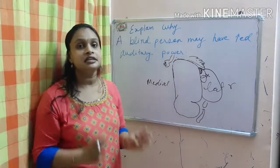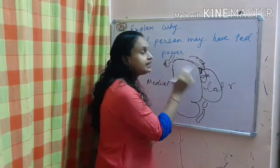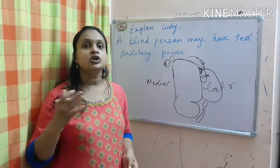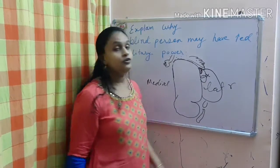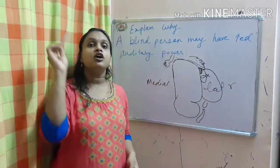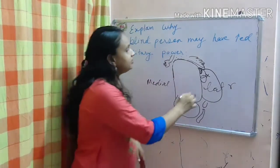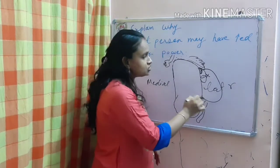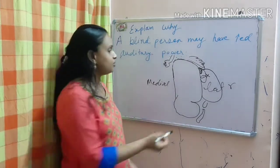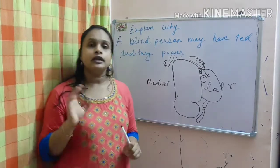So now the auditory cortex has a larger area in comparison to a normal individual. They are having more auditory power — they can discriminate sounds more in comparison to a normal person because of greater representation in the brain. This phenomenon is known as cortical plasticity. When one part's neurons are not receiving sensation, the other part overcomes it. This phenomenon also occurs in the amputated limb — that is phantom limb — where other parts representing adjacent body regions overlap that area.